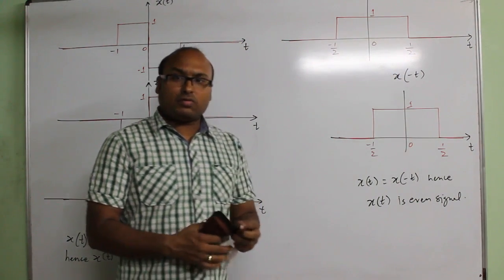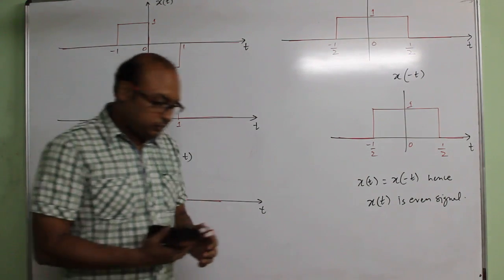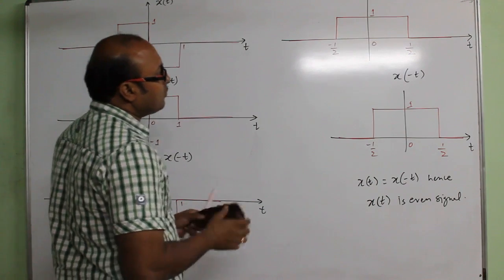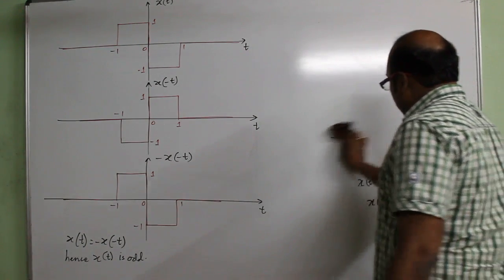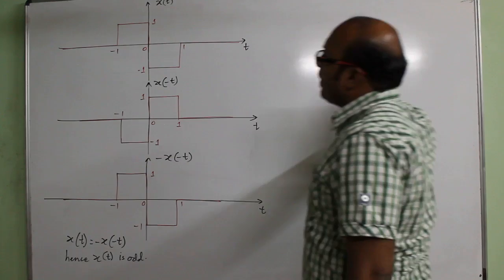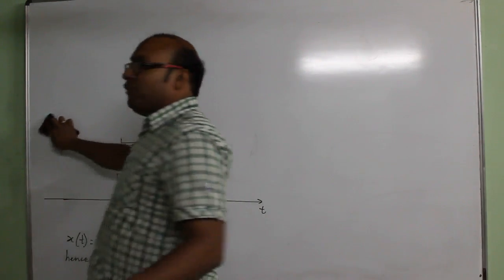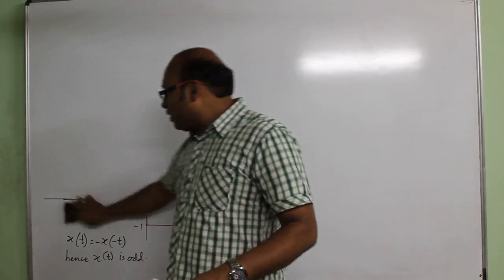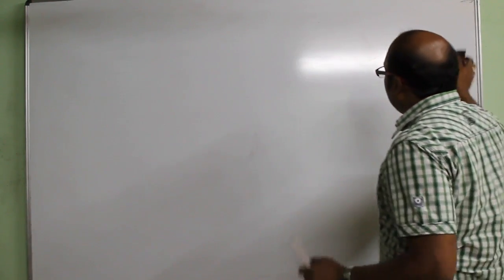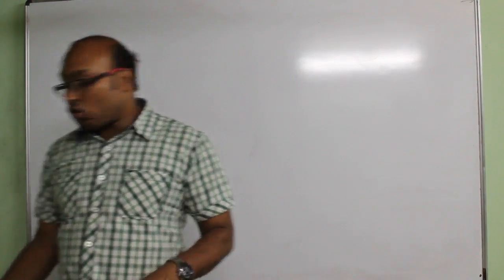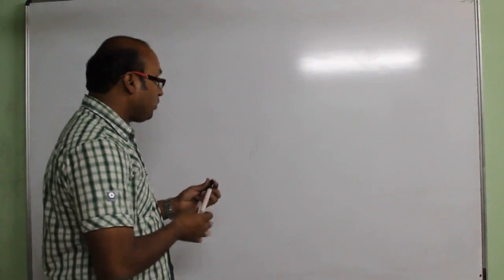We also have signals which are neither even nor odd. Now we can find out even and odd parts of any signal. If a signal is even, then its odd part is zero. If a signal is odd, then its even part is zero. And when a signal is neither even nor odd, then the signal has both even and odd parts.